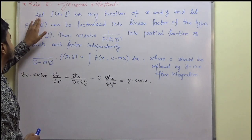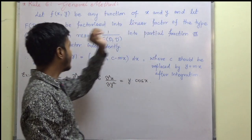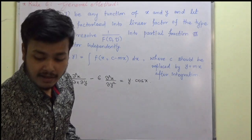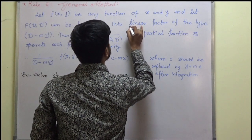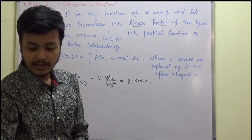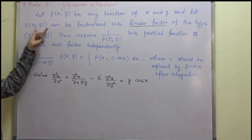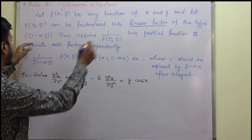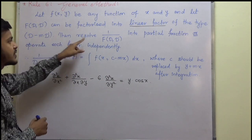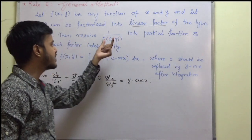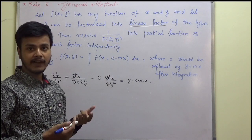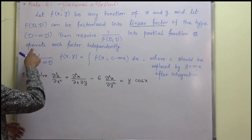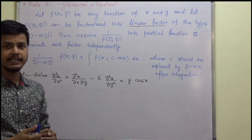Let f(x, y) be any function of x and y, and let F(D, D') be factorized into linear factors. That is the most important thing in this rule — you have to break down the function F(D, D') into linear factors, then only we can proceed to find the particular integral. The linear factor is of the type D minus mD'. If there is a quadratic factor, you have to make it a linear factor, and then operate each factor independently.